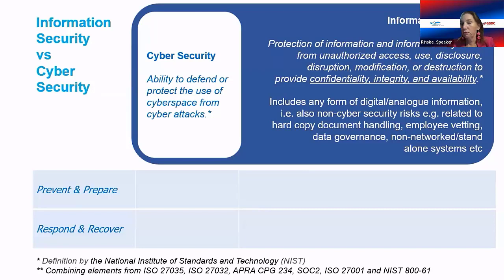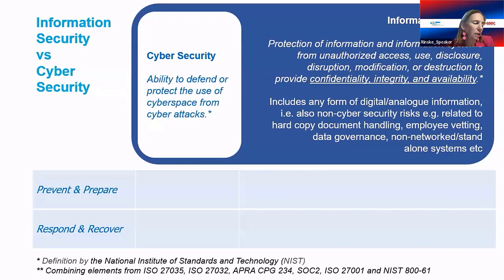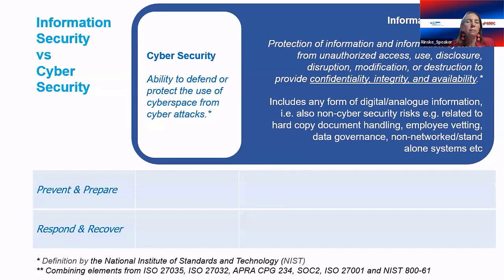Availability relates to disaster recovery processes. Unavailability of data could be due to a cyber attack — for example, ransomware can prevent access to your data or compromise network connectivity. While media coverage often focuses on confidentiality breaches, integrity and availability are equally important concepts included in the ISO 27001 framework.